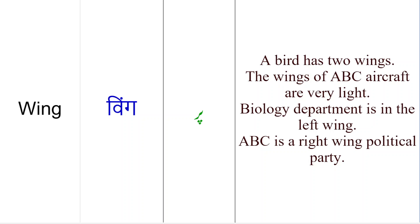Iske alawah doostho, aapne dekha hoga ki jo rugby kheli jati hai, toh usmein bhi jo different left side ke side hote hain unko left wing kaha jata hai, right side ko right wing kaha jata hai. Hockey mein left wing, right wing players hote hain. Jo left side pe khel raha hota hai woh left wing pe khel raha hota hai. Jo right side pe khel raha hota hai use bhi right wing kaha jata hai. Isi tarah center forward hota hai. Toh usmein bhi hum wing ka word use kertai hain.